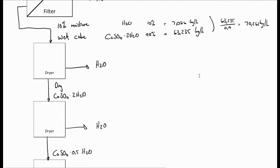Going further through the problem, we then see that the wet filter cake is put into a dryer, where we then get dry calcium sulfate dihydrate out of the system and water. So we know immediately that this water is going to be 7.026 kilograms per hour, and this must be equal to 63.235 kilograms per hour.